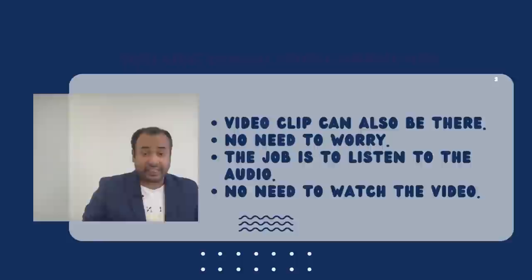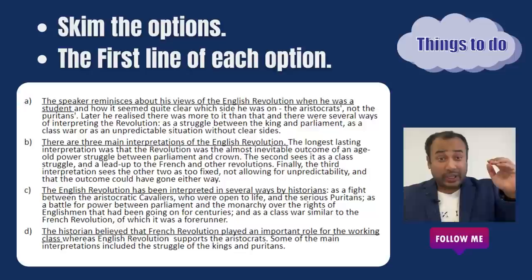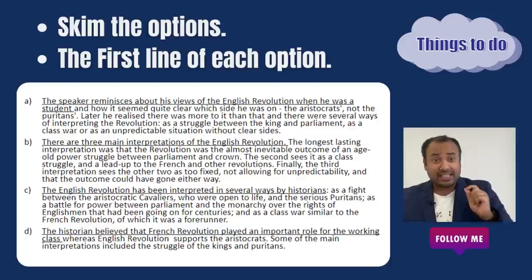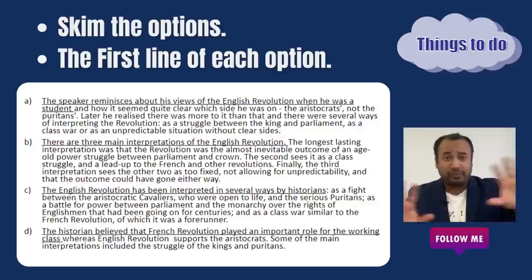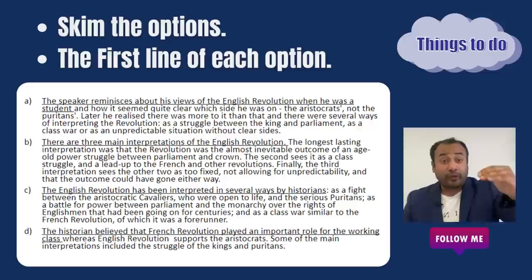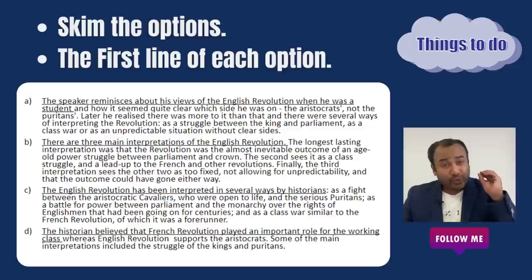Here is the strategy. Your first step is that you need to read the options, but you only get 10 seconds — 10, 9, 8, 7, 6, 5, 4, 3, 2, 1. In 10 seconds you cannot read the full paragraphs; it's quite impossible. What you can do is read only the first line of each option: A's first line, B's first line, C's first line, and D's first line.